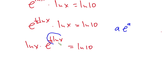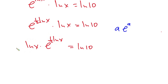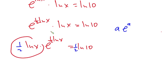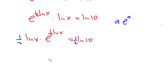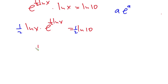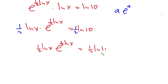Comparing this to the form a·e^a, it's not quite the same yet. So I'm going to multiply each side of the equation by one half. Now you can see that what is on the left matches the a·e^a form. We have one half natural log of x times e to the power one half natural log of x, equal to one half natural log of 10.